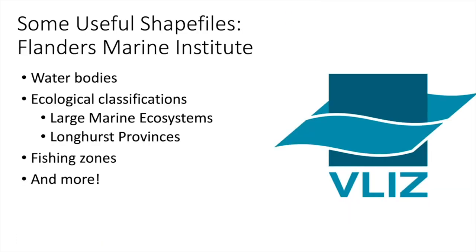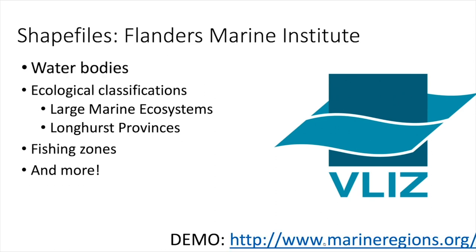There are also some useful shapefiles from the Flanders Marine Institute that you might want to use when you're processing your data in order to get a more reasonable study area based on some sort of biogeographic hypothesis. So you can choose to clip your layers by water body. You can also download shapefiles for ecological classifications, including large marine ecosystems, Longhurst provinces and fishing zones. So if you're interested in particular fishing zones or anything like that, you can download all the shapefiles from the Flanders Marine Institute and then process those data. So let's take a quick look there.